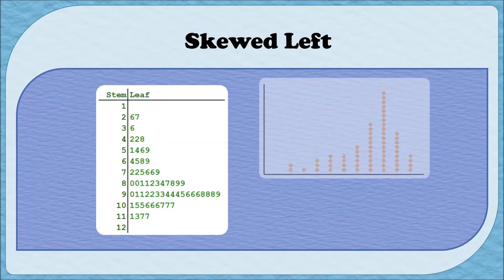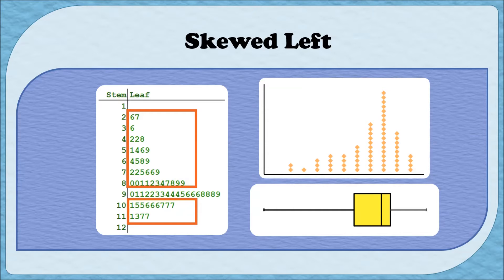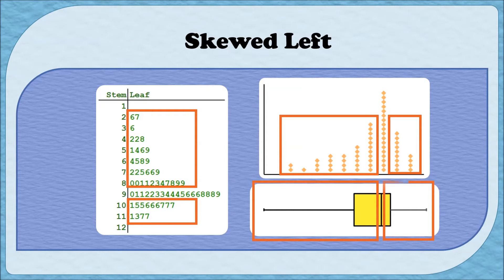Let's examine three other types of graphs that are also skewed left. For the stem and leaf plot the top of the graph corresponds to the left and the bottom corresponds to the right, so the tail on the left is much longer. Similarly, in the dot plot the tail on the left is again much longer than the tail on the right. And in the box plot the yellow box and long line are much more drawn out on the left than on the right. So each of these is skewed left because it's stretched out longer on the left hand side.